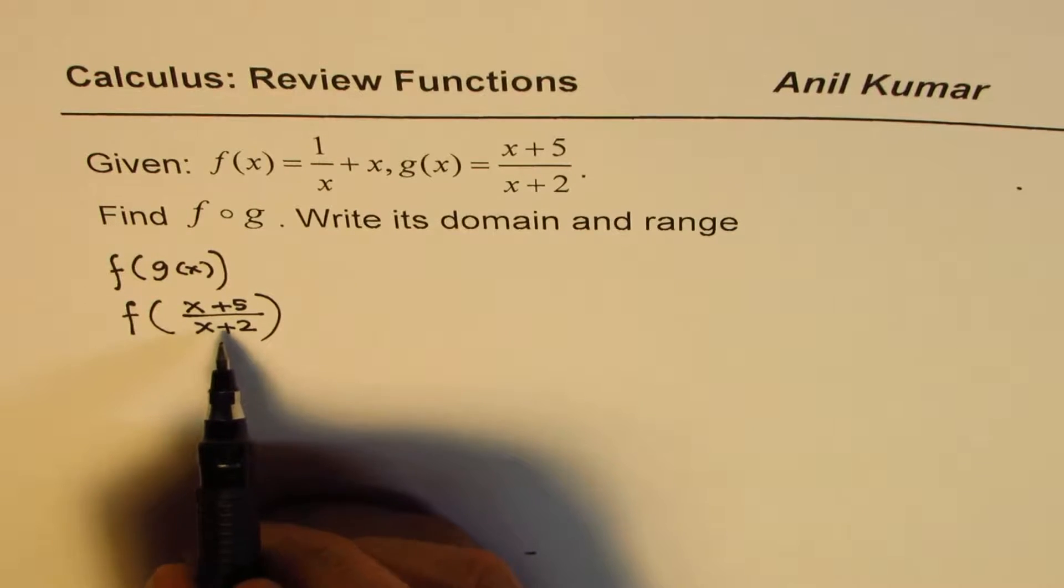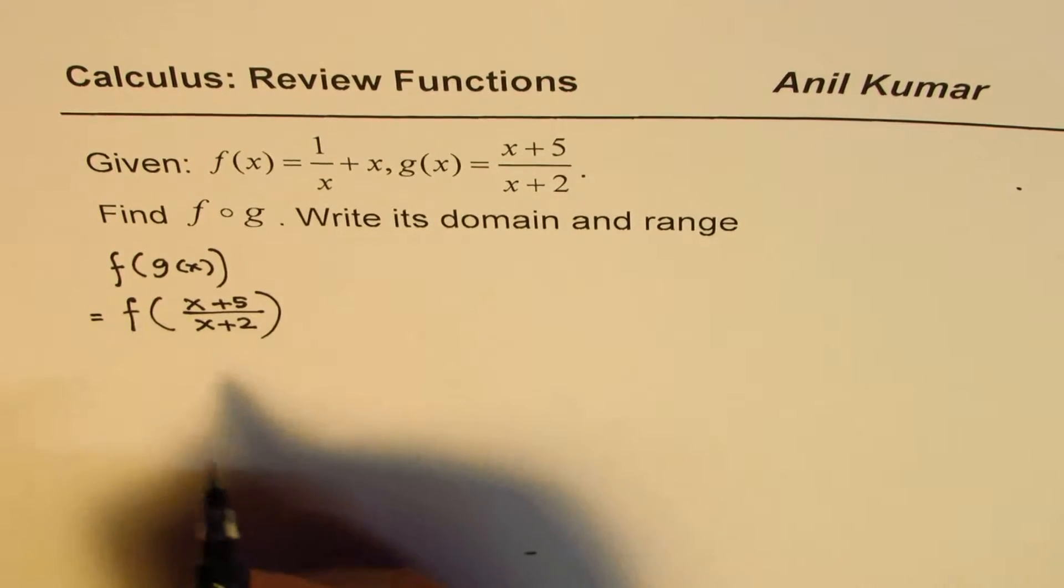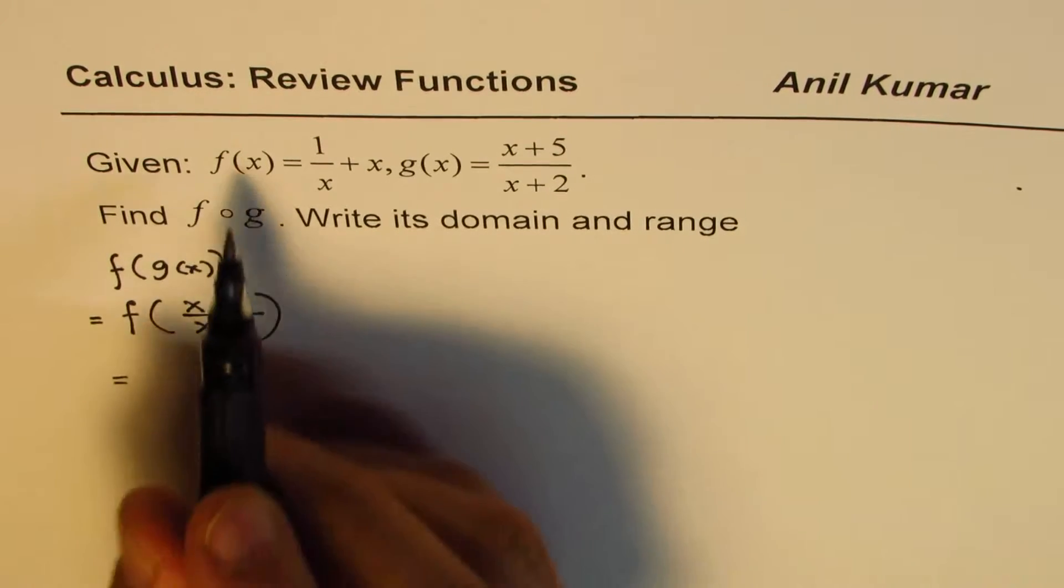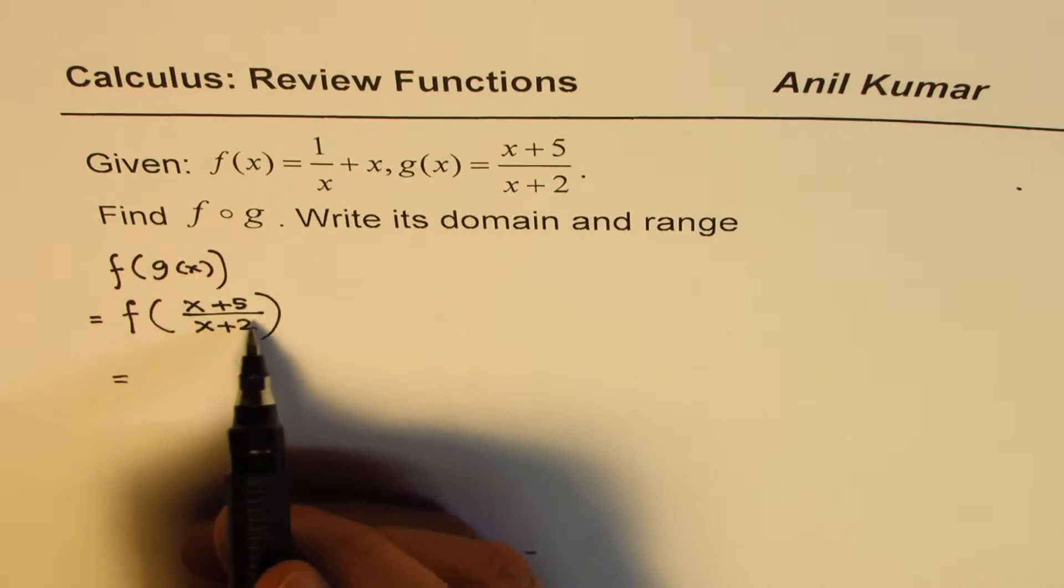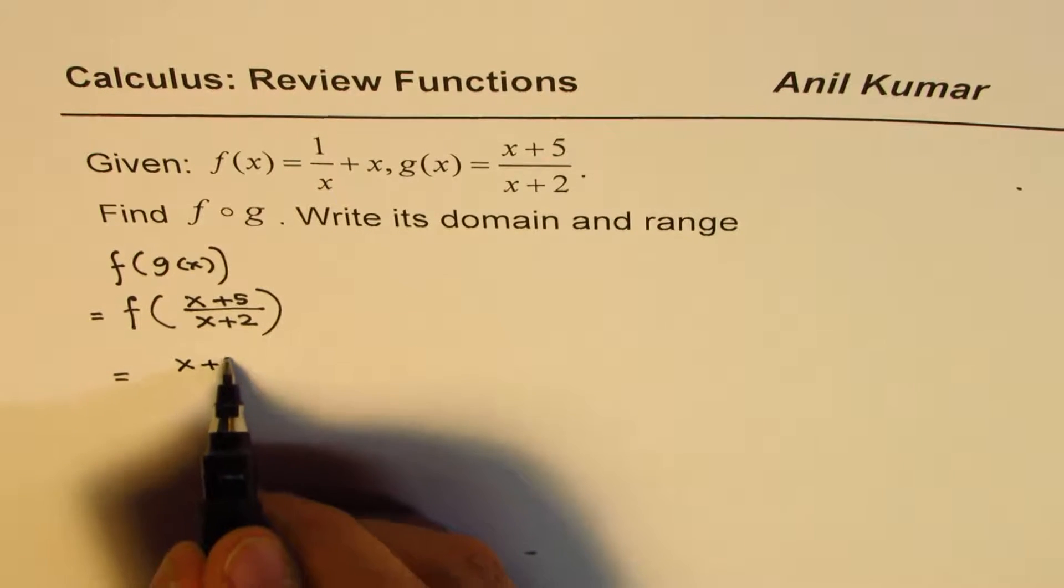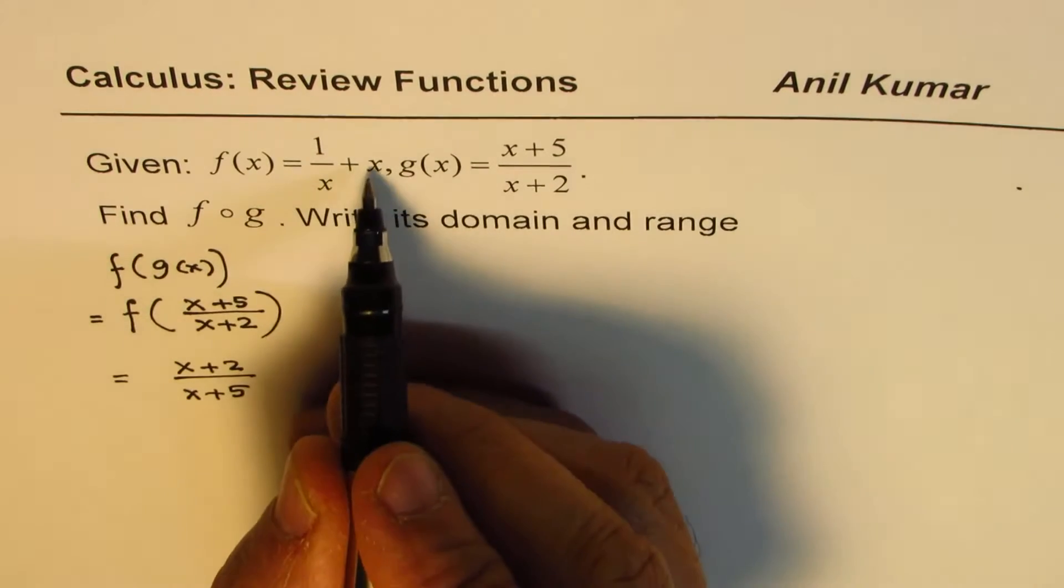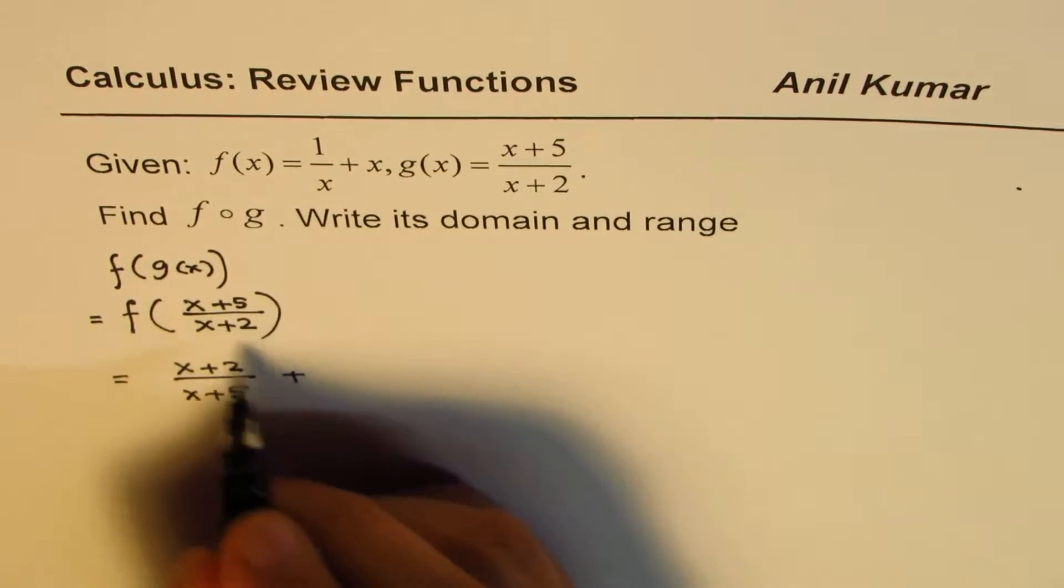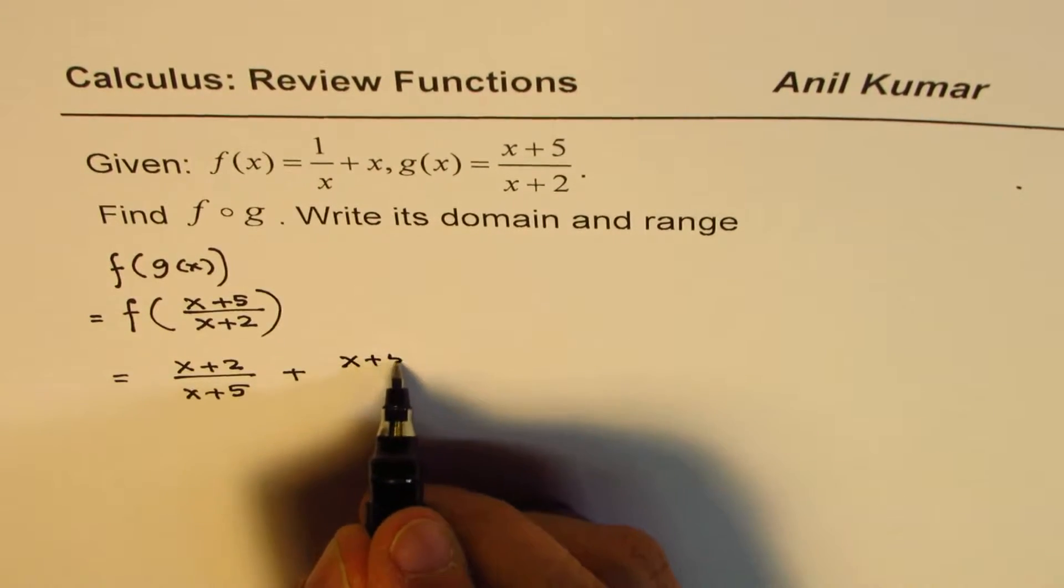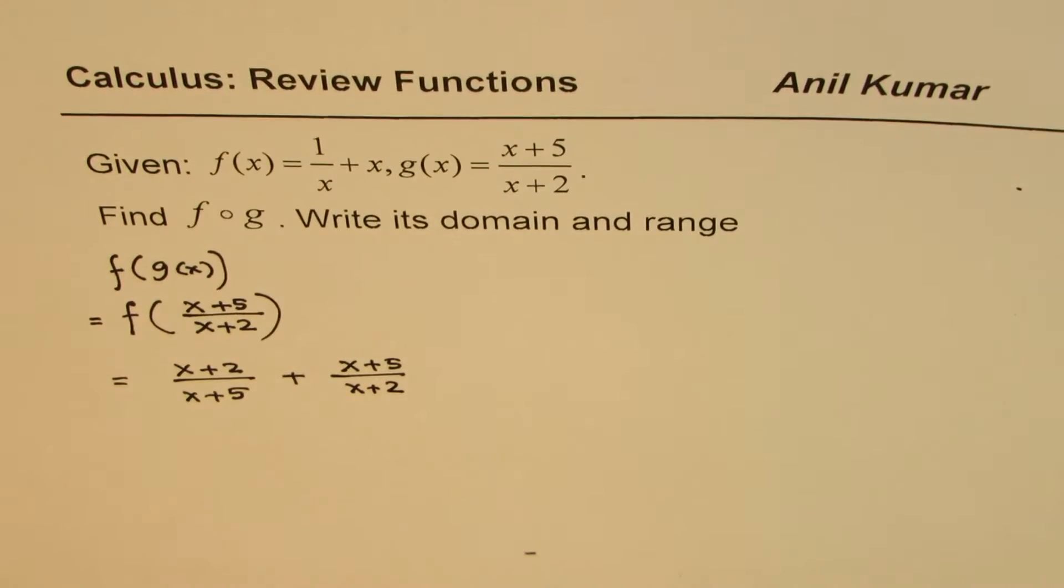And now we can replace this for the function itself. So now we can write this as f of x is 1 over x, that means 1 over this quantity. 1 over this quantity will be x plus 2 over x plus 5 and then plus the same thing, which is x plus 5 over x plus 2.